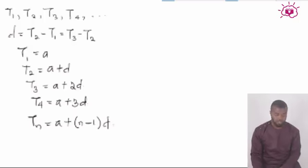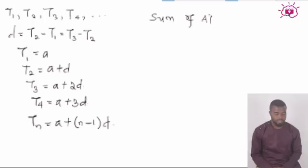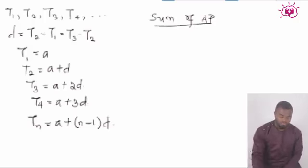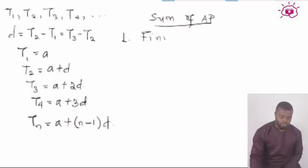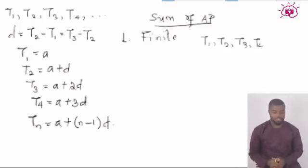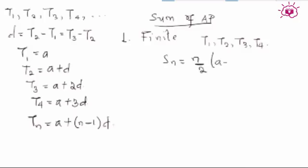Next we go to the sum of an AP, which means adding up terms in an arithmetic progression. For a finite sequence T1, T2, T3, T4, the sum of terms is: Sₙ = N/2 × (A + L), where N is the number of terms being added, A is the first term, and L is the last term.